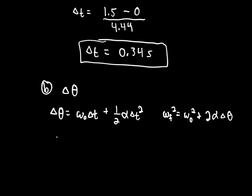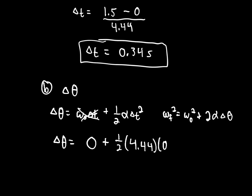Using the first equation: omega-initial is zero so that term drops out. We get change in theta equals one-half times alpha (4.44) times delta-t (0.34) squared. Plugging in all numbers gives change in theta equals 0.25 radians.